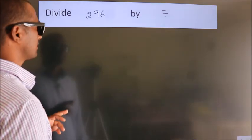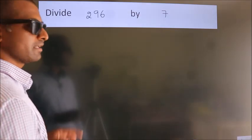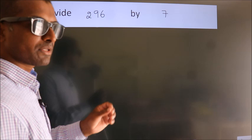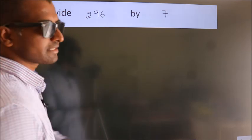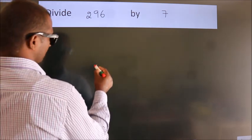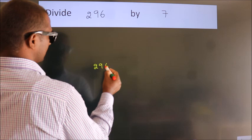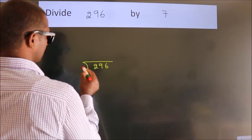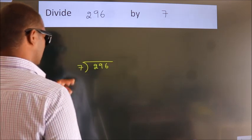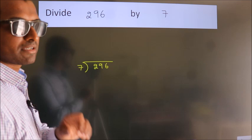Divide 296 by 7. To do this division, we should frame it in this way. 296 here, 7 here. This is your step 1.